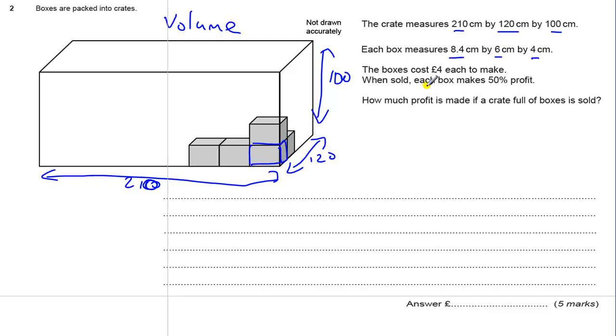So if we say these are going to match up, the 8.4 goes along that side, 6 on this side, and the height of the box is going to be 4.